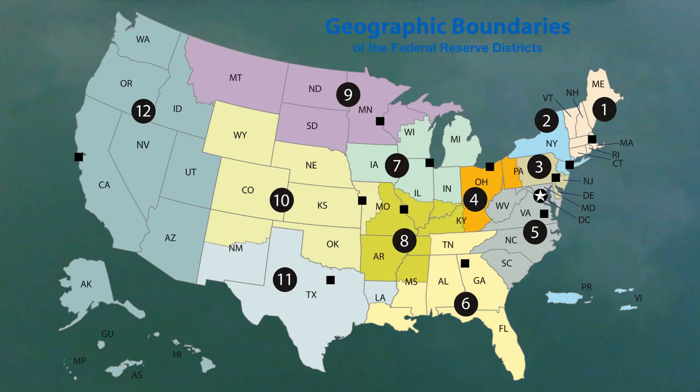The regional boards have 9 members: 3 being bankers elected by the member banks, 3 being appointed by the National Fed Board, and 3 being non-bankers elected by the member banks.